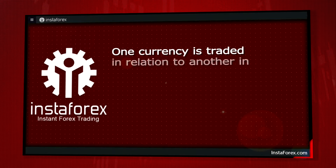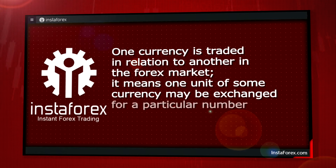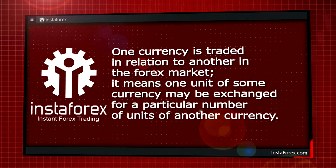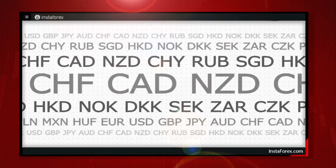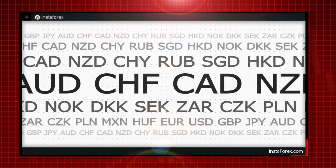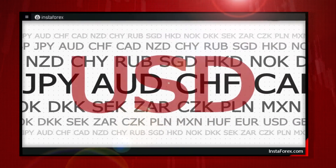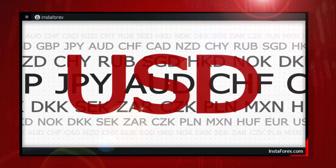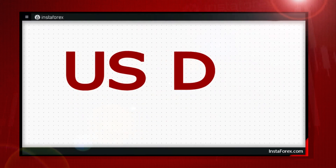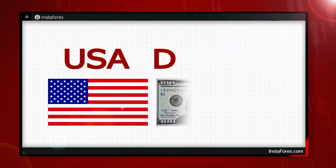One currency is traded in relation to another in the forex market. It means one unit of some currency may be exchanged for a particular number of units of another currency. There are plenty of currency types on forex. Each currency is given a special code consisting of three Latin letters. Usually the first two letters stand for the country of a currency and the third one is the first letter of a currency's name. For instance, in the USD code, the US letters are for the United States and D is for dollar.